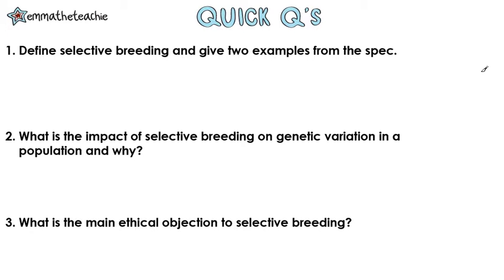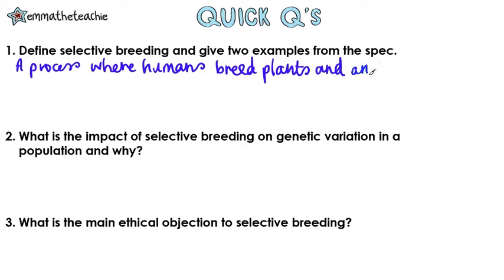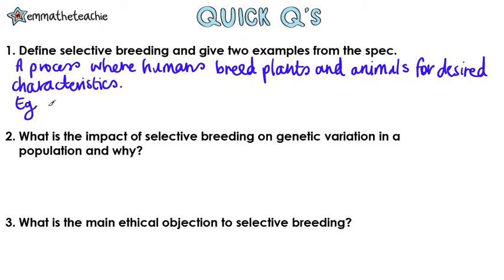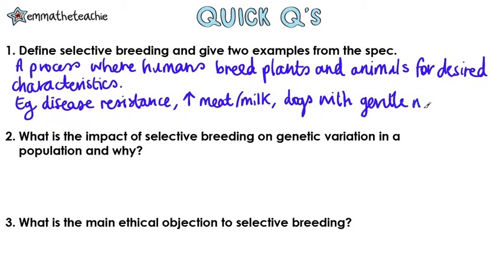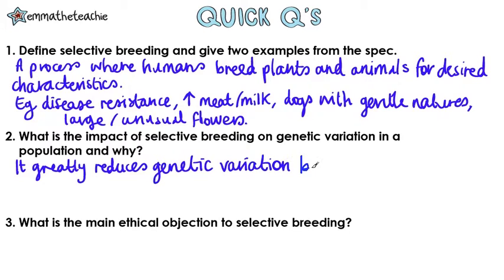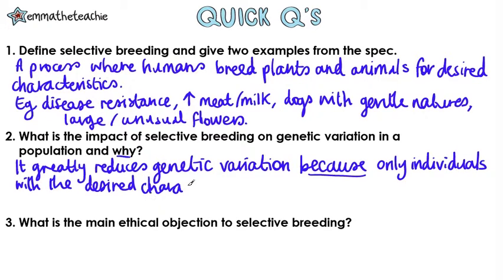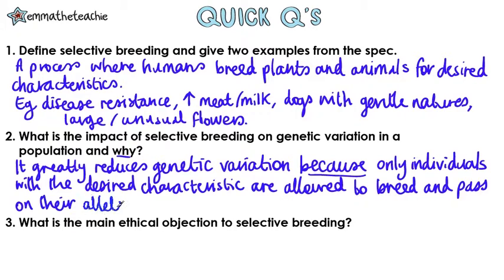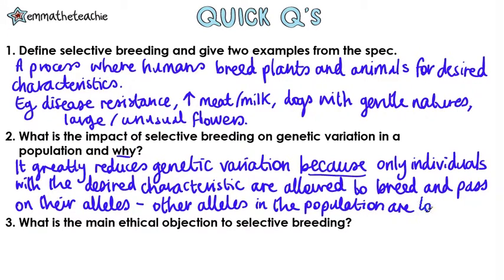Define selective breeding and give two examples from the spec. Selective breeding is the process where humans breed plants and animals for desired characteristics. Examples include disease resistance in crops, increased meat or milk production, dogs with gentle natures, and large or unusual flowers. Selective breeding greatly reduces genetic variation because only individuals with the desired characteristics are allowed to breed and pass their alleles on, and all other alleles in the population will eventually be lost.